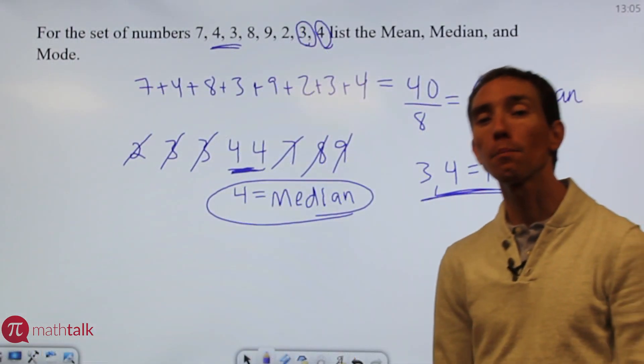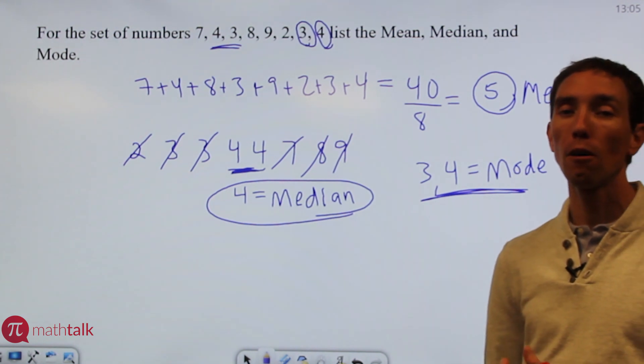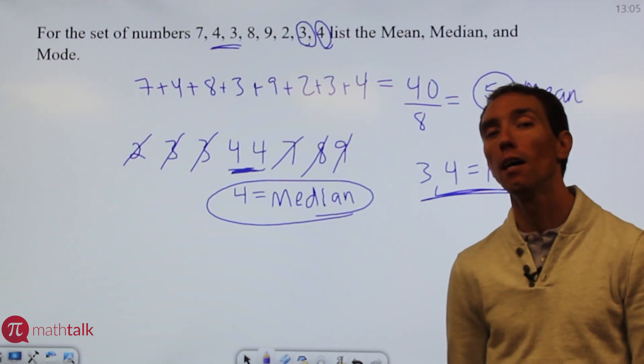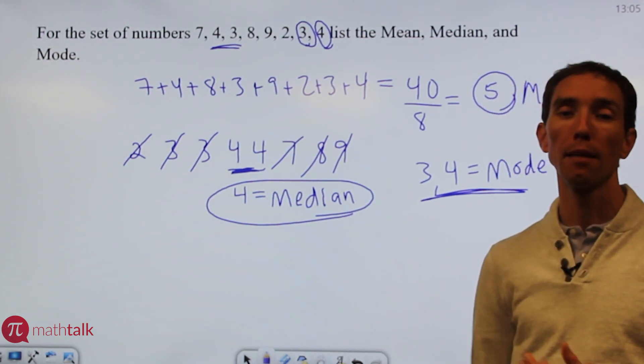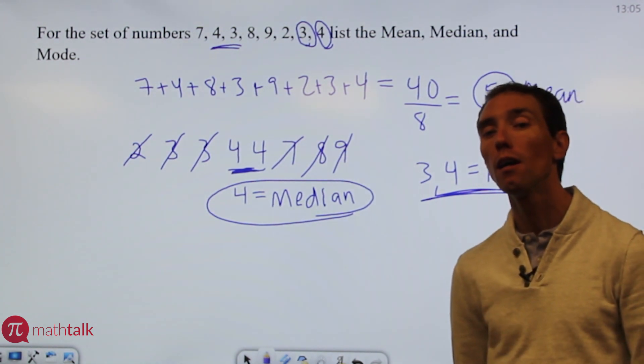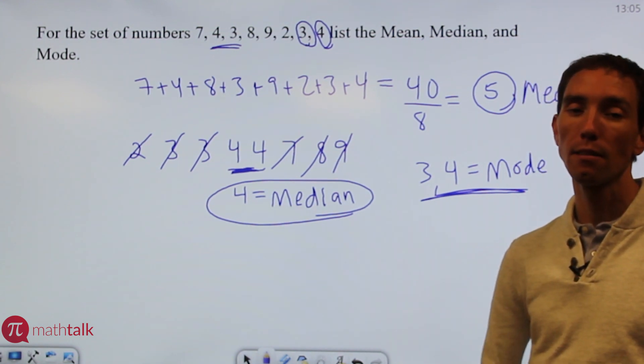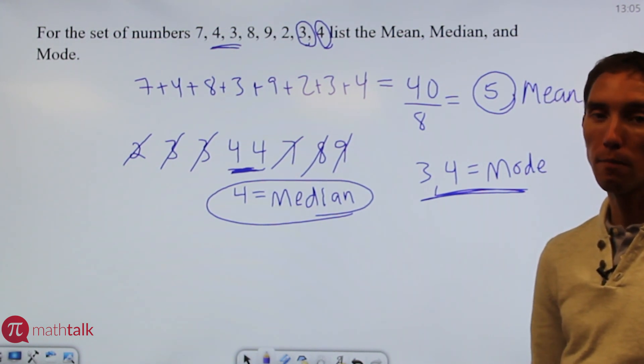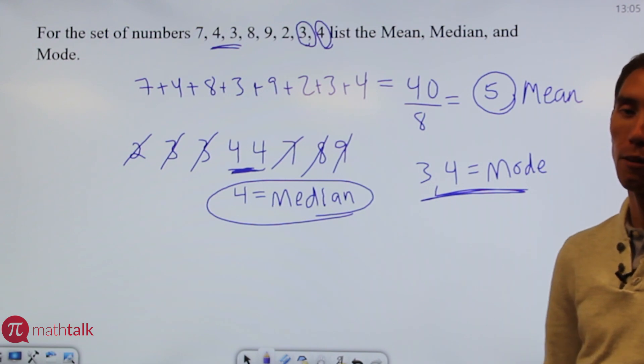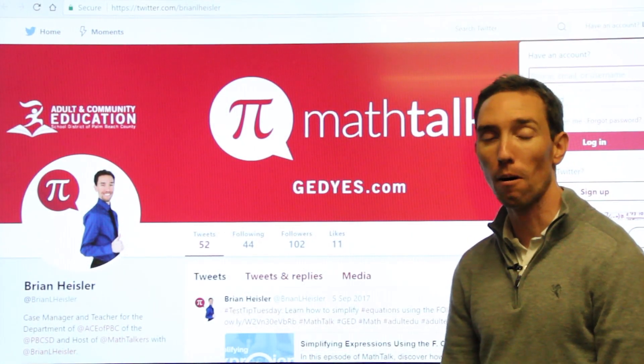When you get to problems like these, I hope that you kind of break down the problems. If there's a formula involved, definitely use your formula sheet. Even for ones that have to do with mean, median, mode, make sure you check it out on your formula sheet for the definition of what they are. But take each problem one at a time, and if you can, break it into different pieces and solve. And I hope this helps. Make sure you check out part 2 of the video and other ones to come. If you have any other questions or you need assistance and you live in the Palm Beach County area, visit our website at geds.com to find a location near you and sign up for classes.